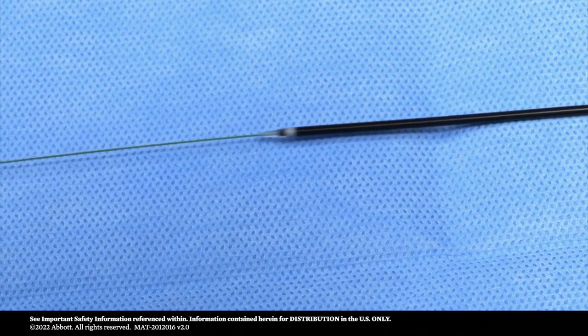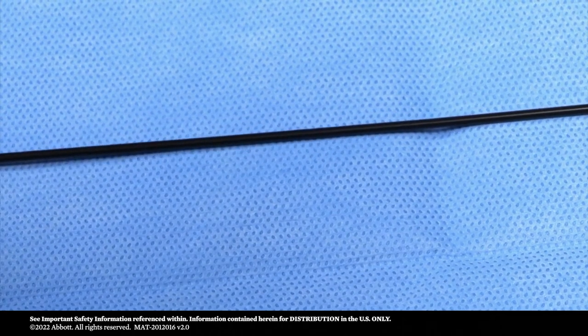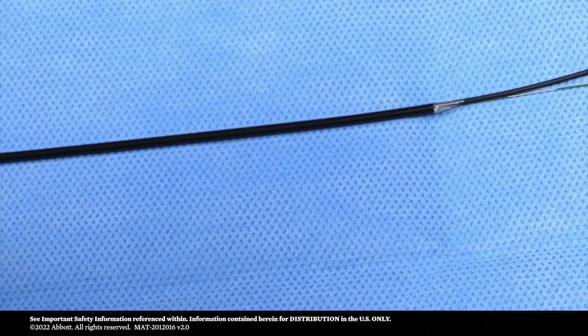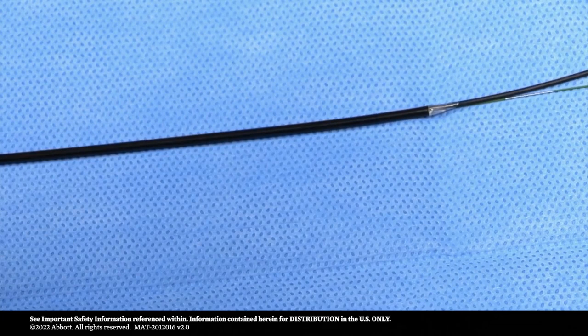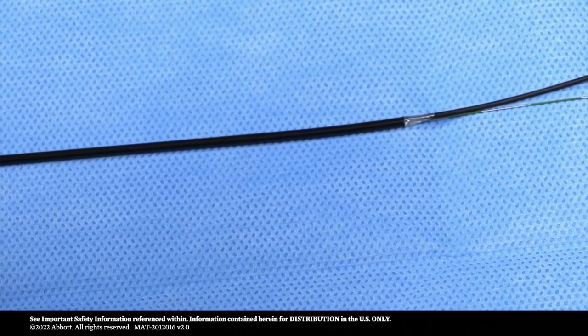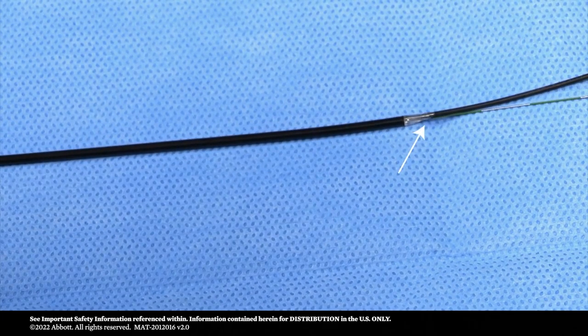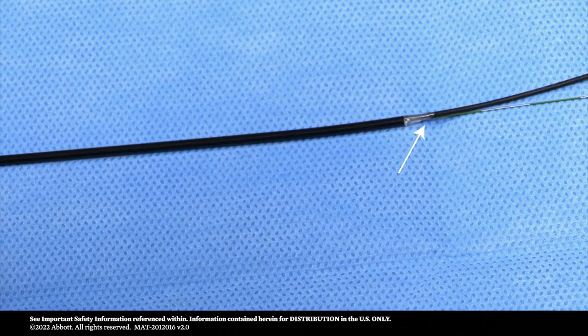Advance the exact carotid stent delivery system over the distal end of the bare wire filter delivery wire as shown. Please note, the bare wire filter delivery wire will exit the guide wire exit port of the delivery catheter as shown. Using fluoroscopic guidance, continue to advance the stent until it is proximal to the lesion.